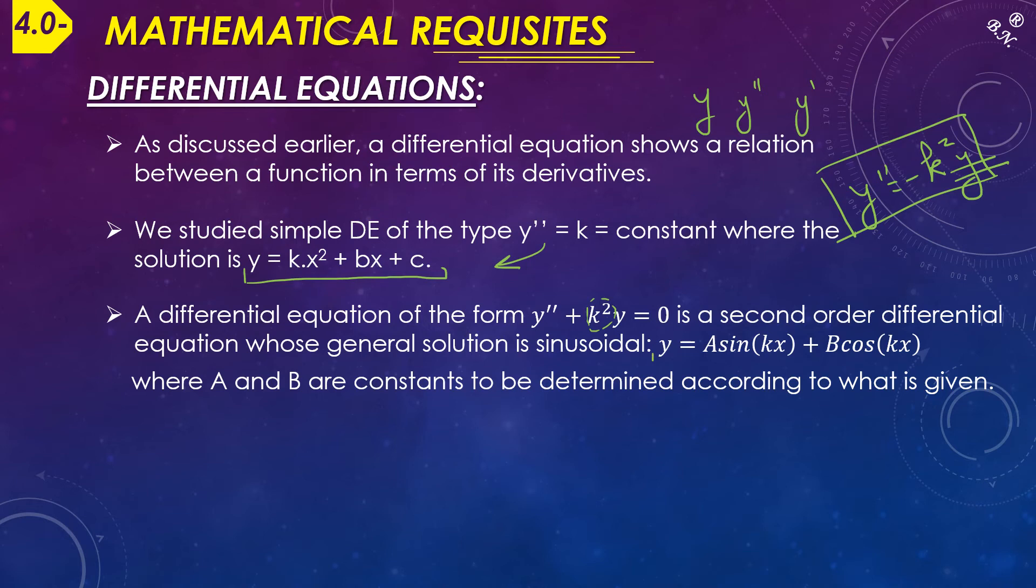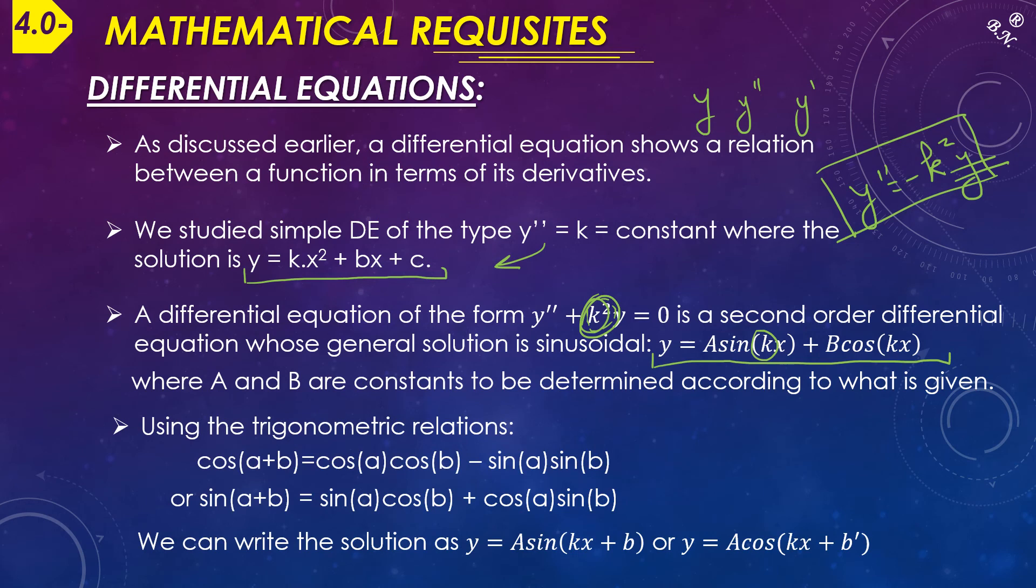This second-order differential equation has a general solution which is y = A sin(kx) + B cos(kx), where k² is the coefficient of y. We will not go into where this equation comes from; we just need to know that the solution is there. A and B are constants to be determined. We're going to benefit from what we learned in trigonometry, where cos(a + b) or sin(a + b) can be decomposed. If you compare this side to that, you notice they are similar.